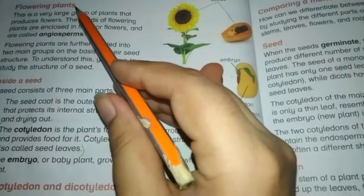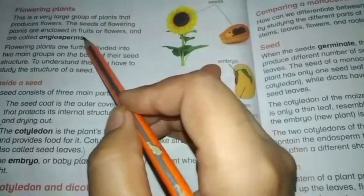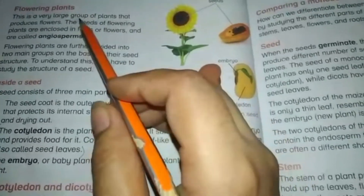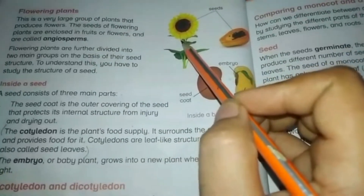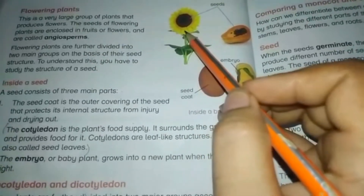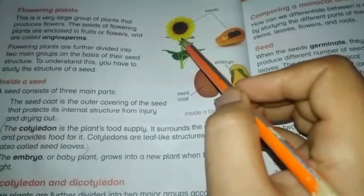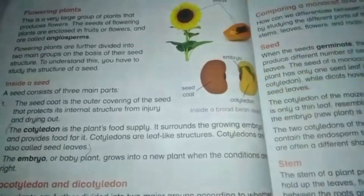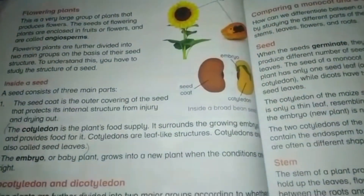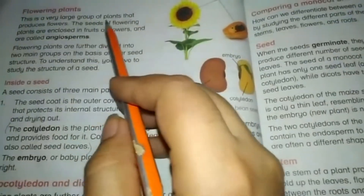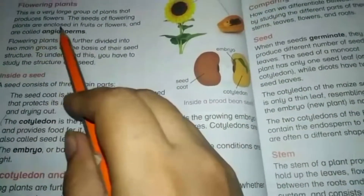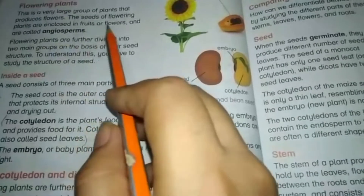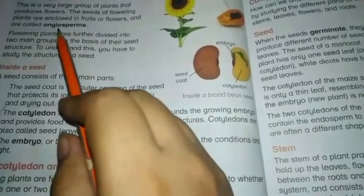Now we will discuss angiosperm plants. Flowering plants are also known as angiosperms. Angiosperms or flowering plants produce flowers and also produce fruits. Their seeds are enclosed in fruits or flowers. These are the special characteristics of flowering plants. This is a very large group of plants, and the seeds of flowering plants are enclosed in fruits or flowers — they are called angiosperms.